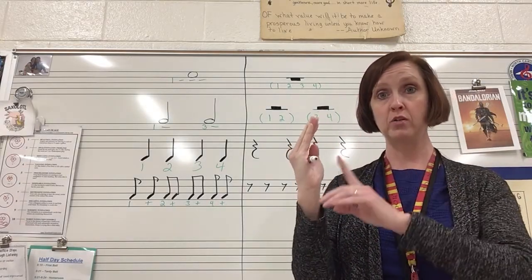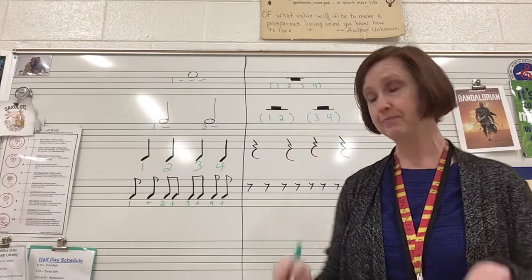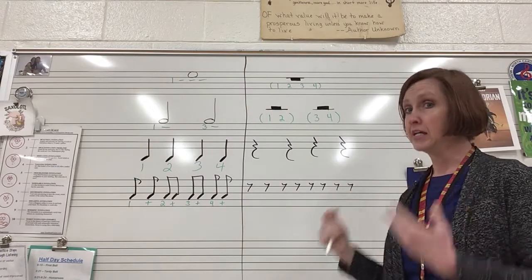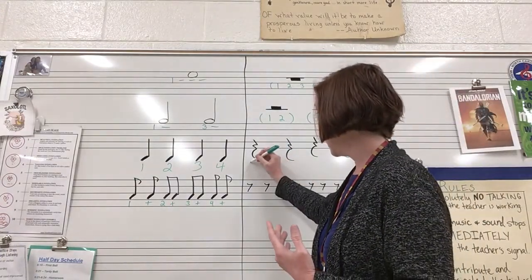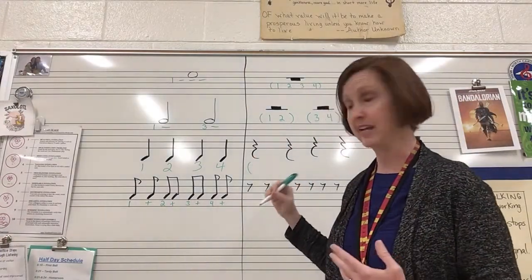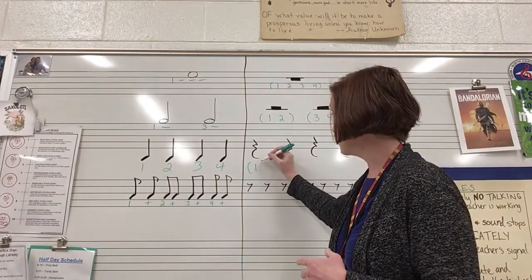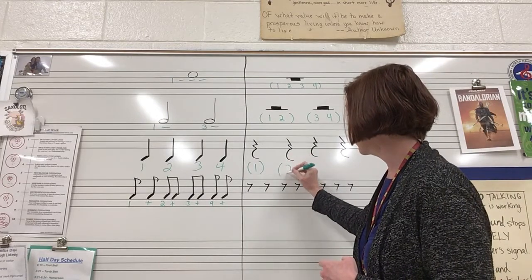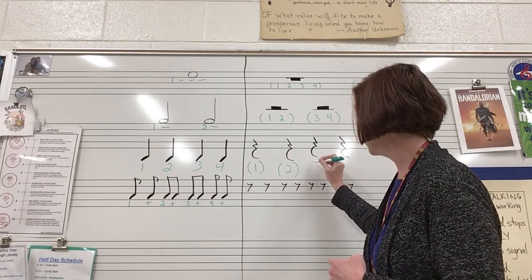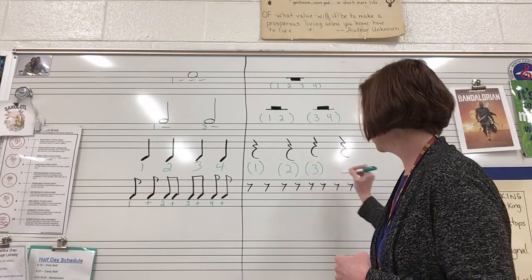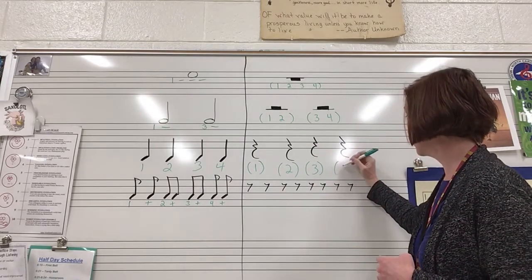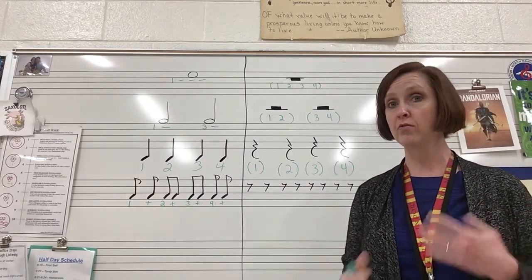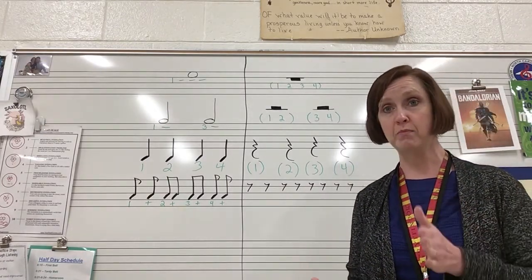For quarter rests, each rest gets its own set of parentheses and you just put the beat number inside. So I put a one inside parentheses for the first one, two inside parentheses for the second, three inside parentheses, and four inside parentheses. When you're dealing with quarter notes or rests, it's just the beat number.